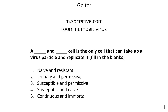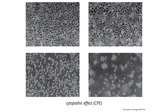Now that we have cells to study virus infection, how do we know a virus is infecting a cell? How do we measure infection? One early method is by looking at infected cells and seeing them die as virus replication proceeds. This death is called cytopathic effect, or CPE — I'll often use that abbreviation.